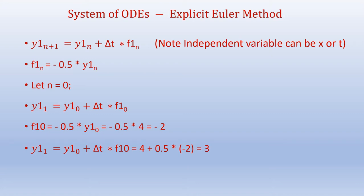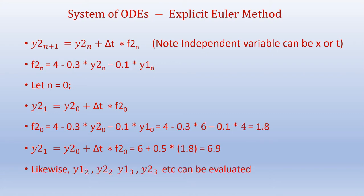Likewise, we'll try to solve the second equation: y2_{n+1} = y2_n + Δt × f2_n. Here the independent variable can be x or t; in our case it is x. f2_n = 4 - 0.3 × y2_n - 0.1 × y1_n.